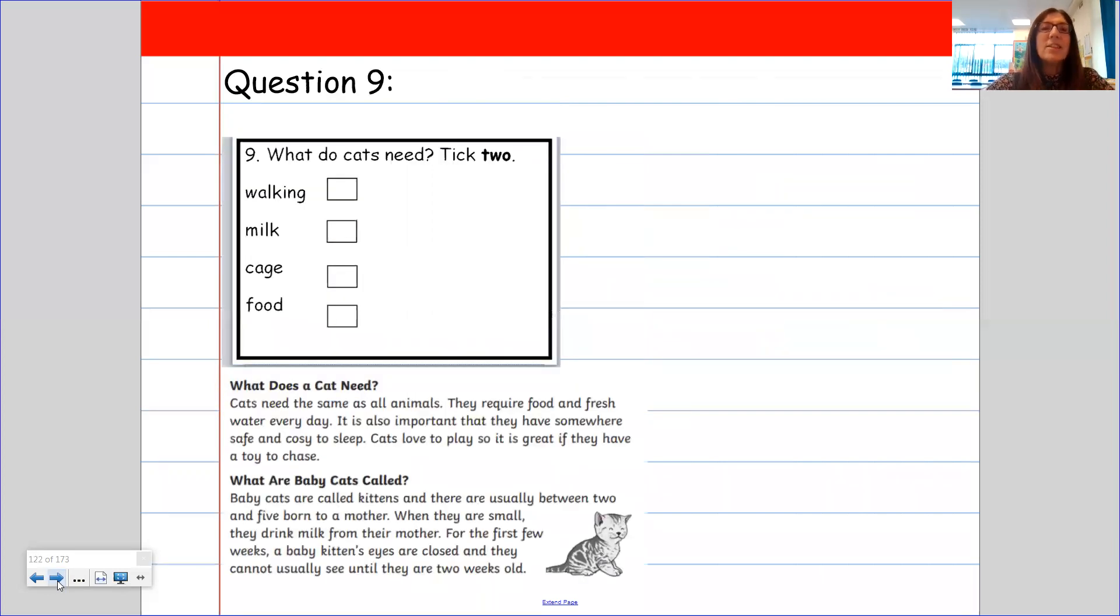Now, question 9 says, what do cats need? You're going to have to tick two of them. So just remember it's only two of them. Do they need walking? Do they need milk? Do they need a cage? Do they need food? Now, if you look at the text below, it says that they require food and fresh water. So I'm going to tick food. Now, water isn't on there. But in the next paragraph, it says that they drink milk from their mother. So I would tick milk.